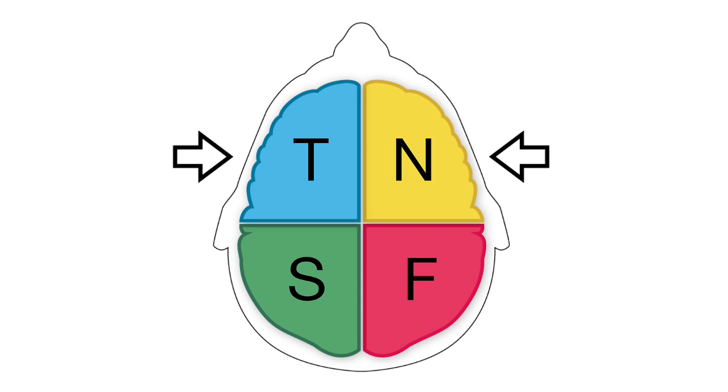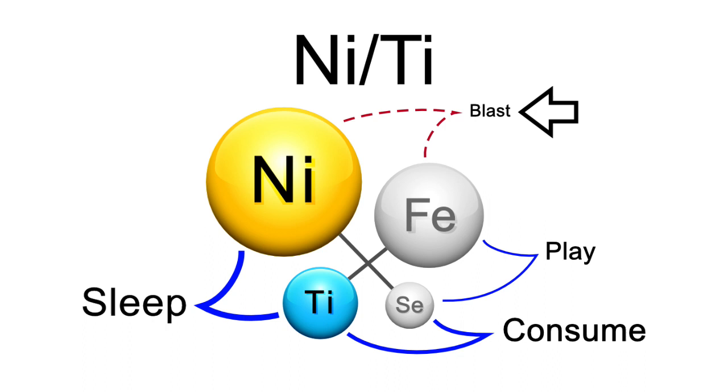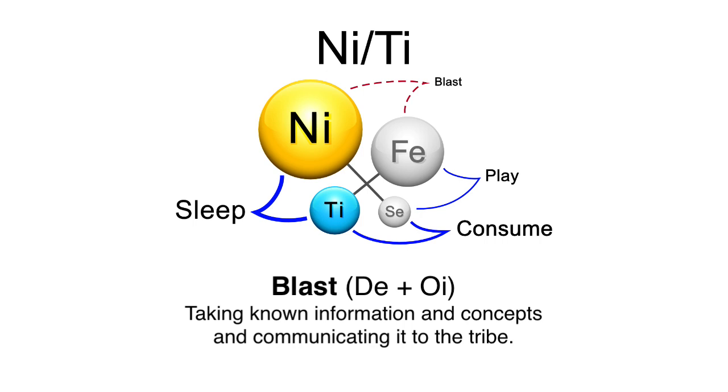And then some INFJs are high in blast, whether Ni and their Fe are firing strongly together, whether communicating their known information, and some are not like the Ni/Ti sleep, consume, play. So they are going to have blast last. So when it comes to their first two functions talking to each other, their Ni and their Fe, that's going to be rather hard for them. Taking their known information, their known concepts, and clearly communicating it to the tribe, much like I'm doing now, is going to be hard for them.